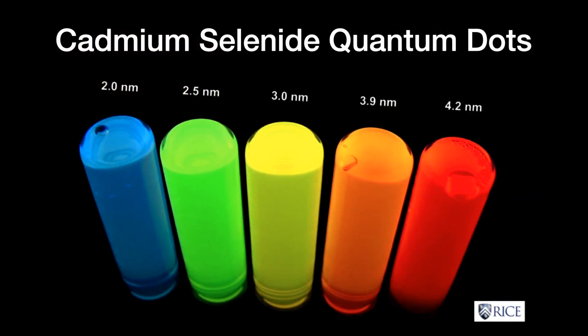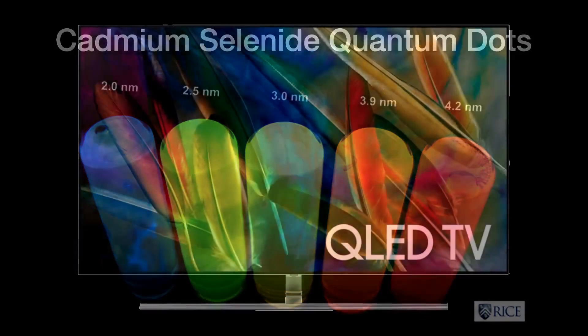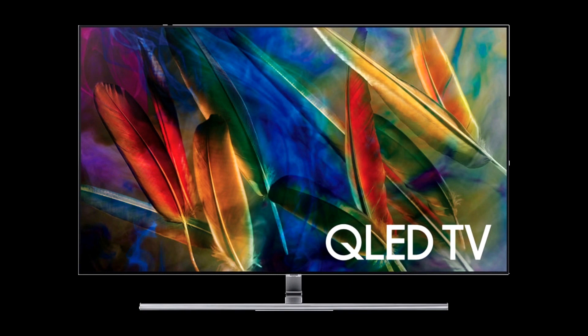Cadmium selenide quantum dots, or QDs, are nanoparticles that fluoresce in a variety of colors determined by the size of the particle. The same exact material — cadmium selenide — is in each vial of liquid here; only the size of the particles is different, and that size is used to tune the color. Those sizes are labeled above the vials in nanometers. The vials are being illuminated with an ultraviolet light to make them fluoresce. One application is in making LCD panels brighter and more color-saturated using a quantum dot panel that emits light at just the right colors to more efficiently pass through the red, green, and blue filters in front of the liquid crystals.